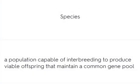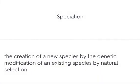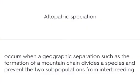A species is a population capable of interbreeding to produce viable offspring that maintain a common gene pool. Speciation is the creation of a new species by the genetic modification of an existing species by natural selection. Allopatric speciation occurs when a geographic separation, such as the formation of a mountain chain, divides a species and prevents the two populations from interbreeding.